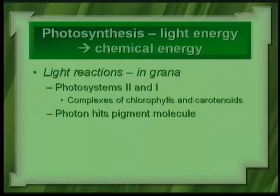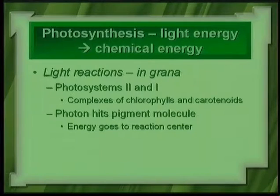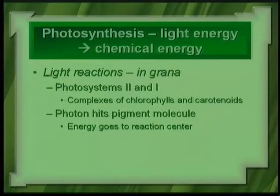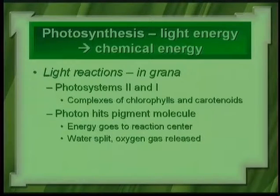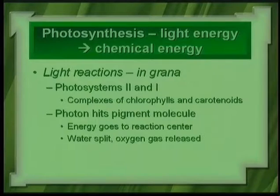During the light reactions, a photon — a packet of light — hits a pigment molecule in photosystem 2. The energy bounces from one pigment molecule to the next, going to a reaction center chlorophyll. Water is split, oxygen gas is released — the oxygen gas comes from the water, not from the carbon dioxide. The electron liberated from the water splitting is excited — raised to a high energy state.